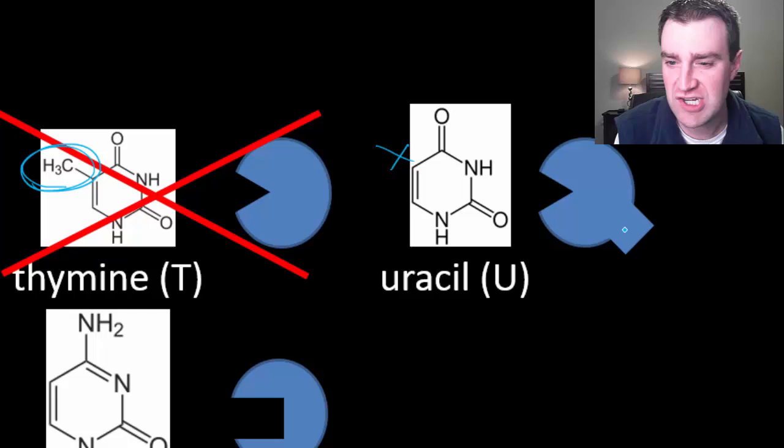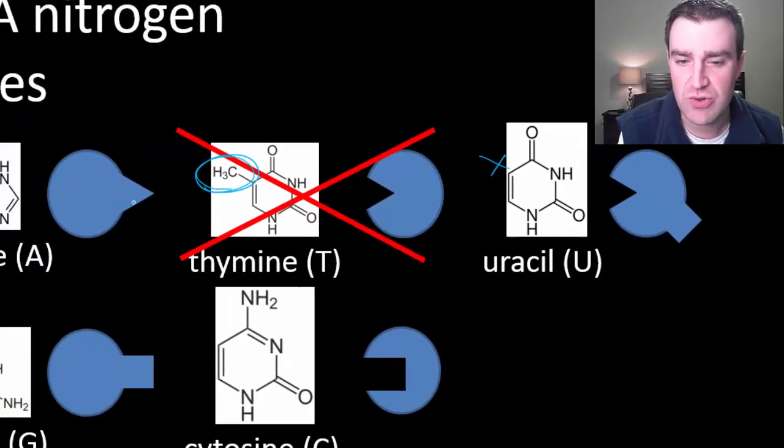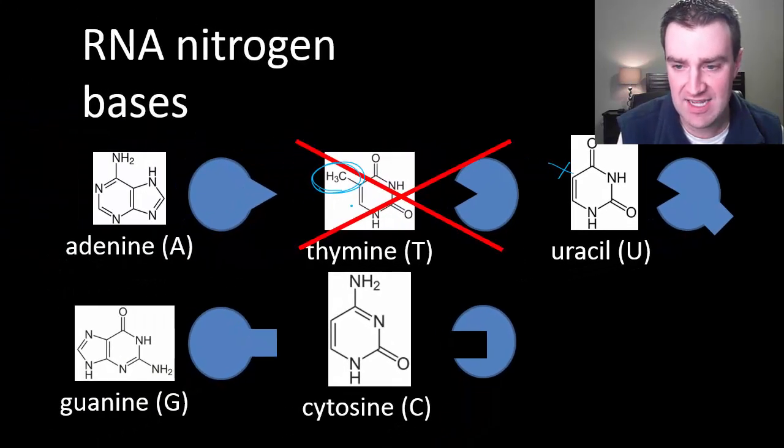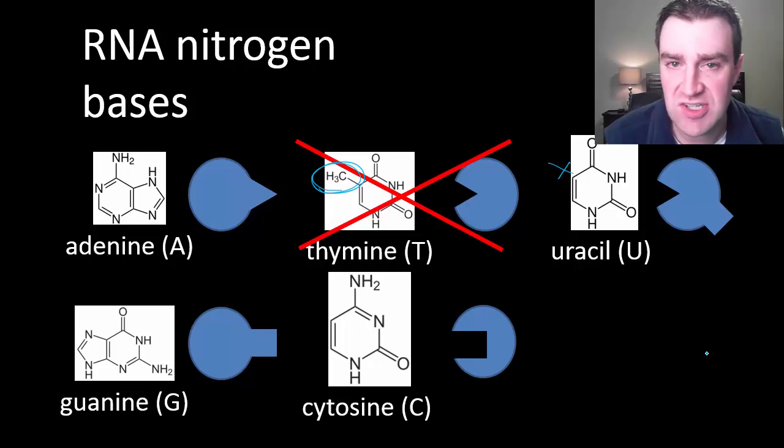I made uracil a slightly different shape. It still has the crucial shape to fit adenine, so adenine still pairs with uracil in RNA. RNA doesn't have thymine, but because it's a slightly different chemical, we give it a different name: uracil, or U. Notice that RNA still has A's, C's, and G's.